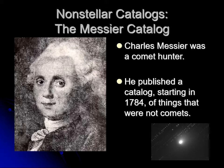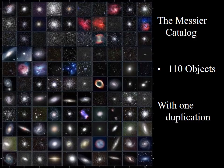He realized that these were fixed objects in the sky — they were not stars, but they were not comets either. So he made a list of things that were not comets and published a catalog of them. We call it the Messier catalog.